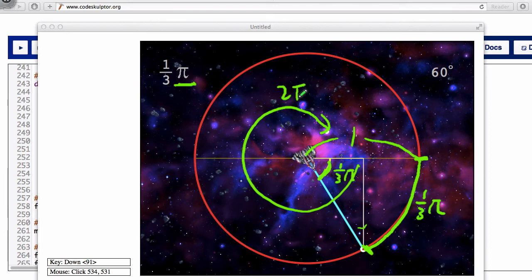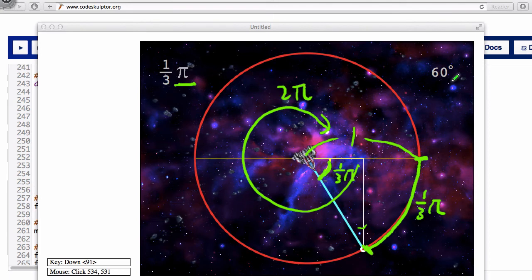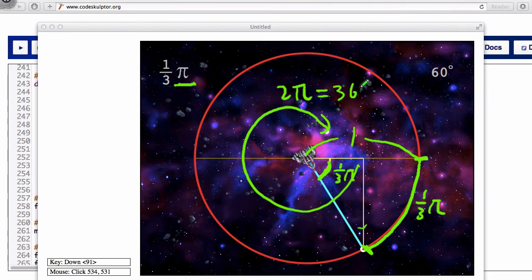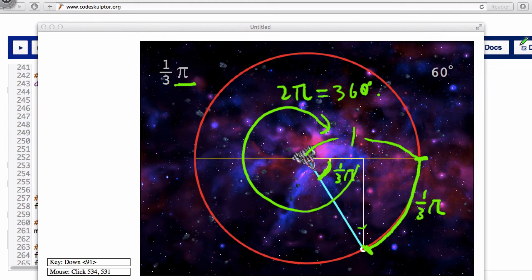So if you go all the way around, that's the angle of 2 pi. And of course, 2 pi is 360 degrees.